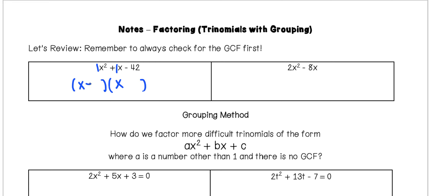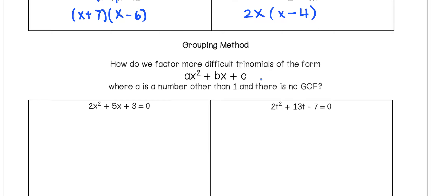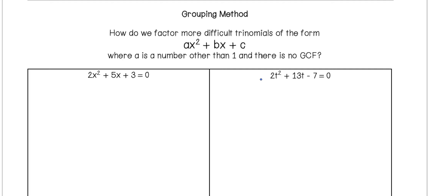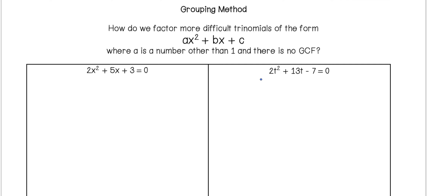That would be positive 7 and negative 6. If we add those together, we get positive 1, and when we multiply them, we get negative 42. In the next example, we see that each of the coefficients are even, so we can factor out a 2, and they each have at least one X, so we can factor out 2X. That would leave us with X minus 4 in the parentheses. We're going to keep that GCF method in mind while working through our new methods, because sometimes it makes the problem easier if you factor out a GCF before applying the grouping method.